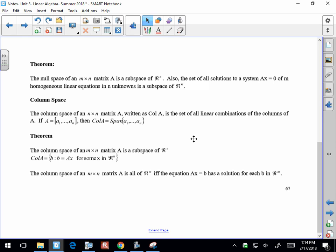Column space, I gave you the notation earlier, col A, set of all linear combinations of columns of A. If A is equal to a sub 1 through a sub n, then the column space is your span of all the elements a sub 1 through a sub n. So there's really nothing more to it than that.